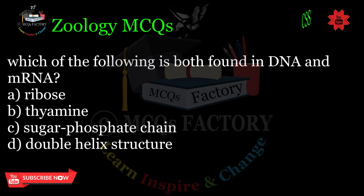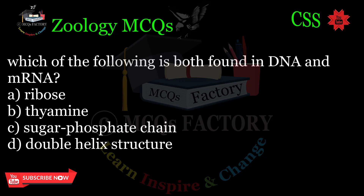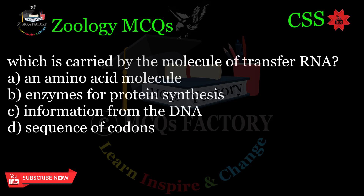Which of the following is found in both DNA and mRNA? A. Ribose. B. Thymine. C. Sugar phosphate chain. D. Double helix structure. Correct answer: C.